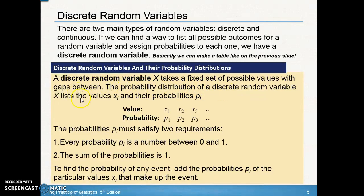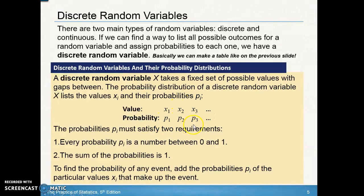The probability distribution of a discrete random variable lists the values x1, x2, x3 — basically zero heads, one head, two heads, three heads — and then p1, p2, p3, the probability of each occurring. The probabilities must satisfy two requirements: each value must be between 0 and 1, and the sum of all probabilities must equal 1, representing 100% of all possibilities. To find the probability of any event, add the probabilities of the particular values that make up that event.